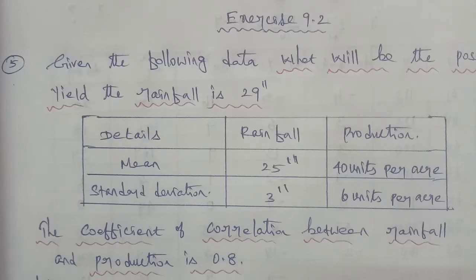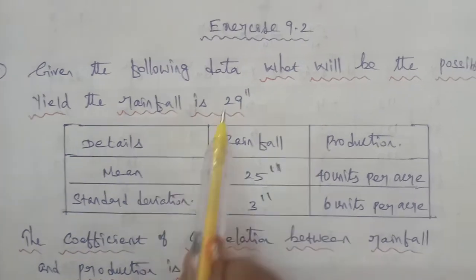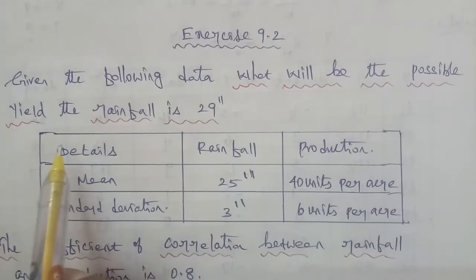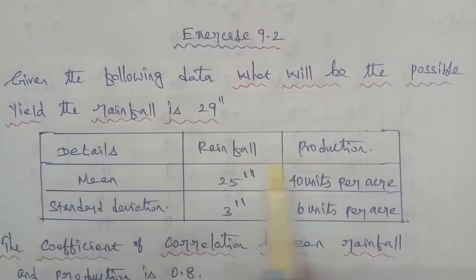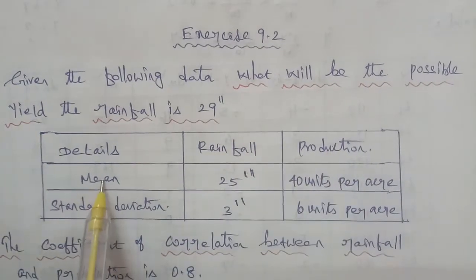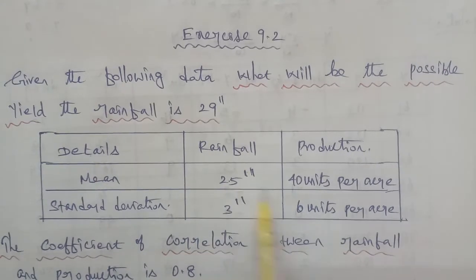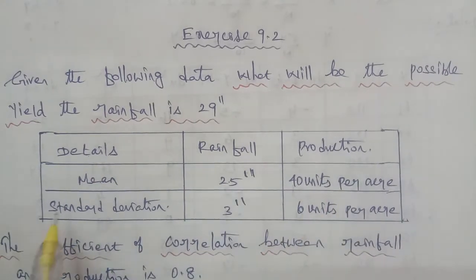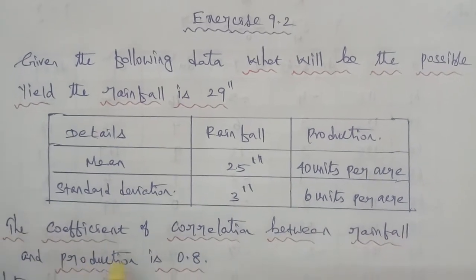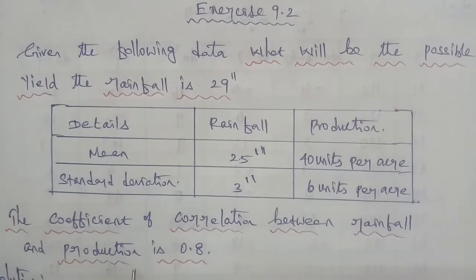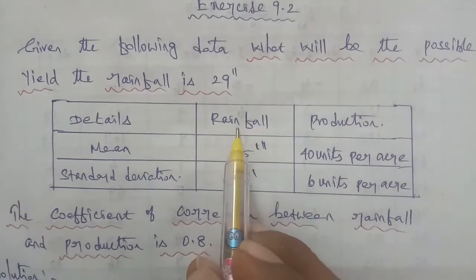Hi students, I am solving 11th Business Maths, Exercise 9.2, Question Number 5. Given the following data, what will be the possible yield? The rainfall is 29 inches. The mean rainfall is 24 inches, production is 40 units per acre, standard deviation is 3 inches and 6 units per acre, and the coefficient of correlation between rainfall and production is 0.8.